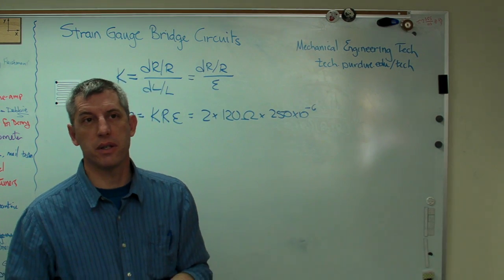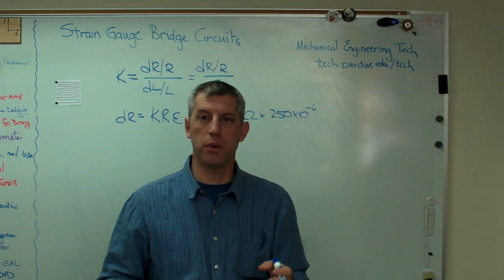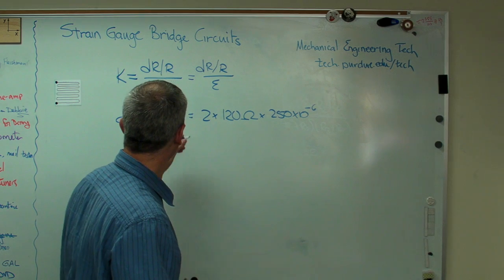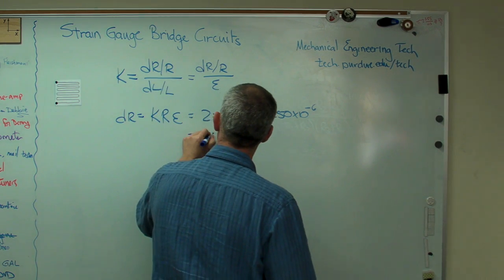Remember, strain is unitless. It's in millimeters per millimeter or inch per inch or light years per light year. It doesn't matter. So these are all pretty typical numbers. When I multiply those out, I get 0.06 ohms.